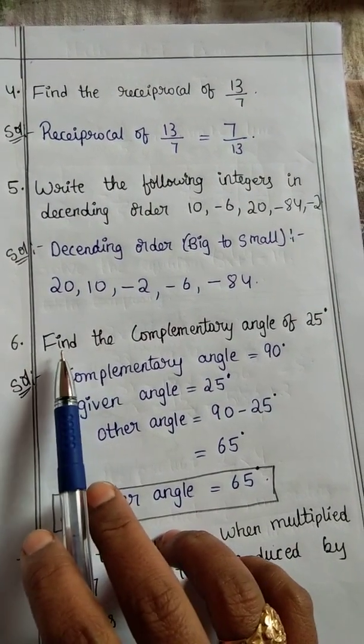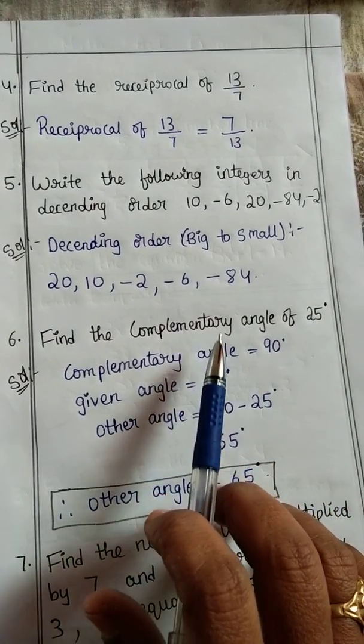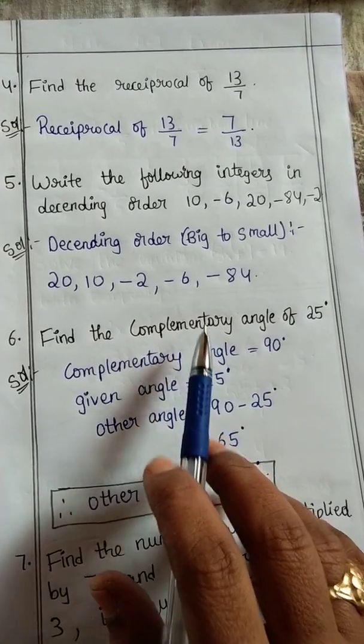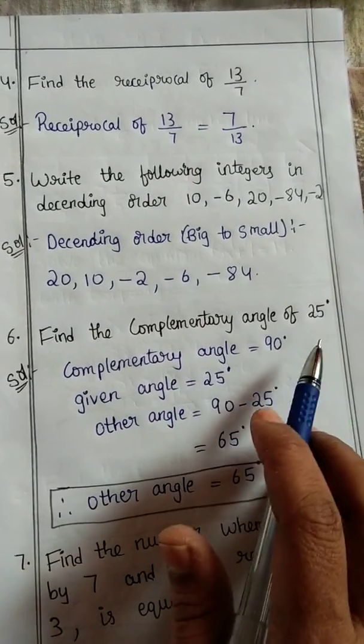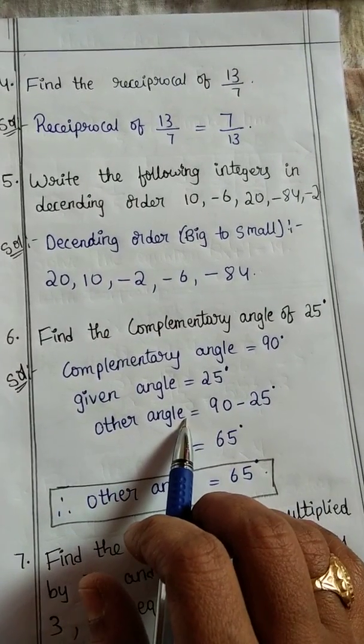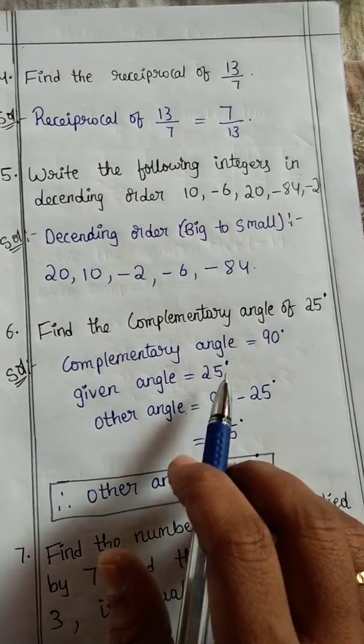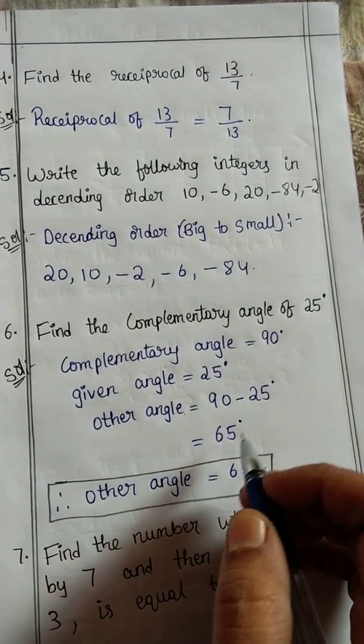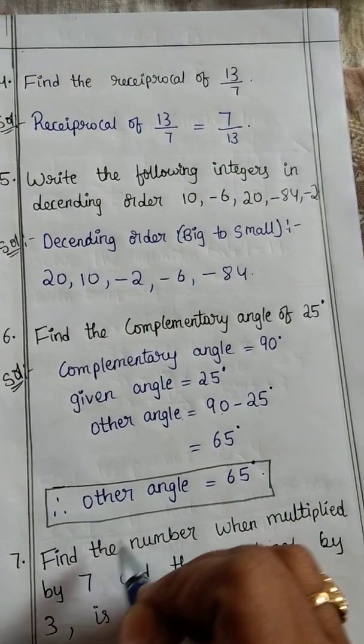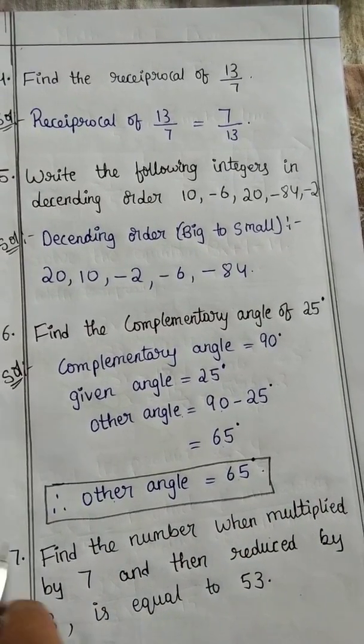Sixth question: find the complementary angle of 25 degrees. First, what is complementary? The sum of 2 angles should be 90, then we call those complementary angles. Here one angle is given 25 degrees. The other angle we can find by subtracting the given angle from 90. So 90 minus 25 is 65. Therefore the complement angle of 25 is 65.